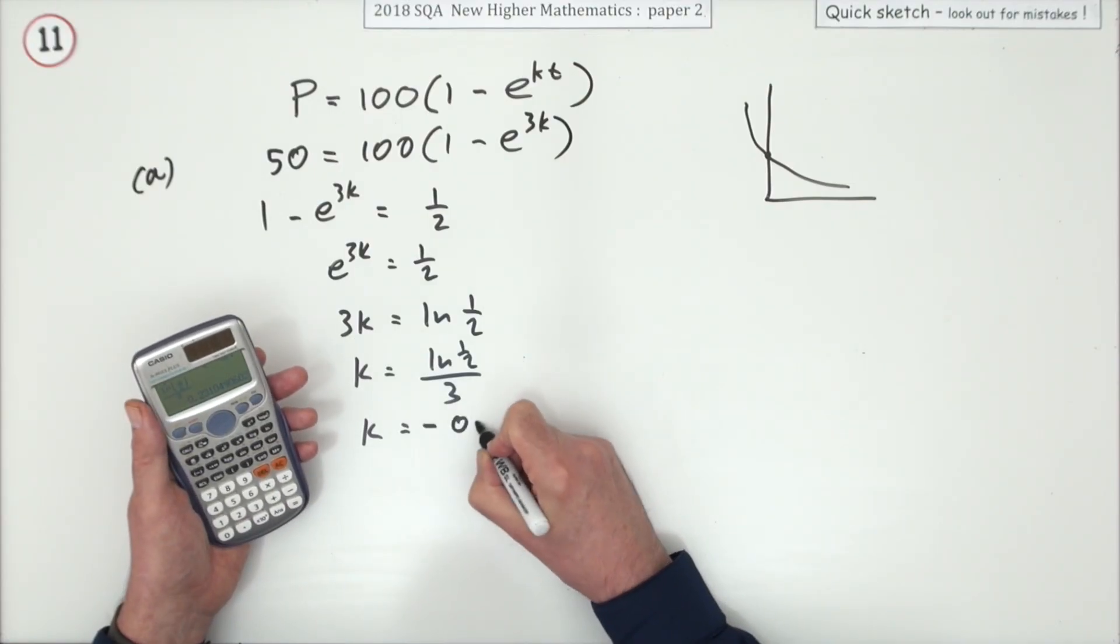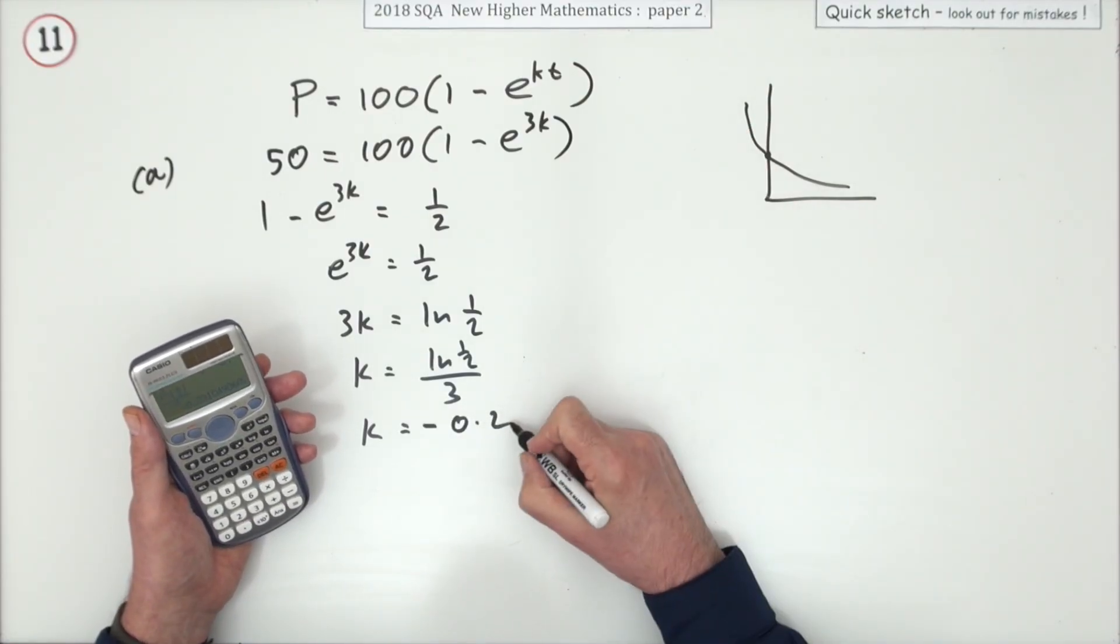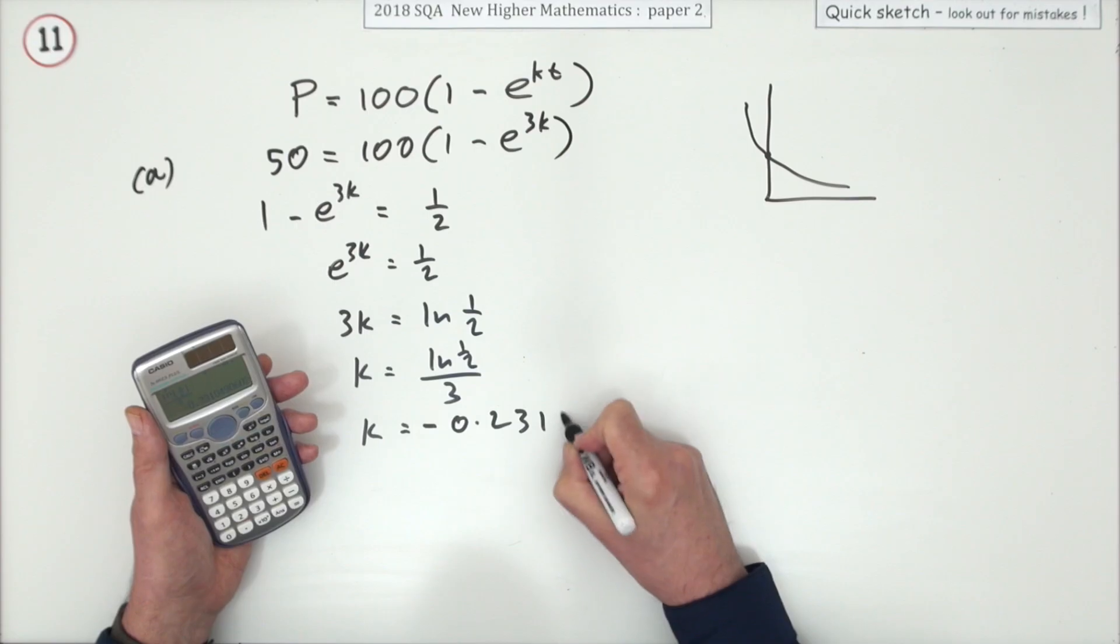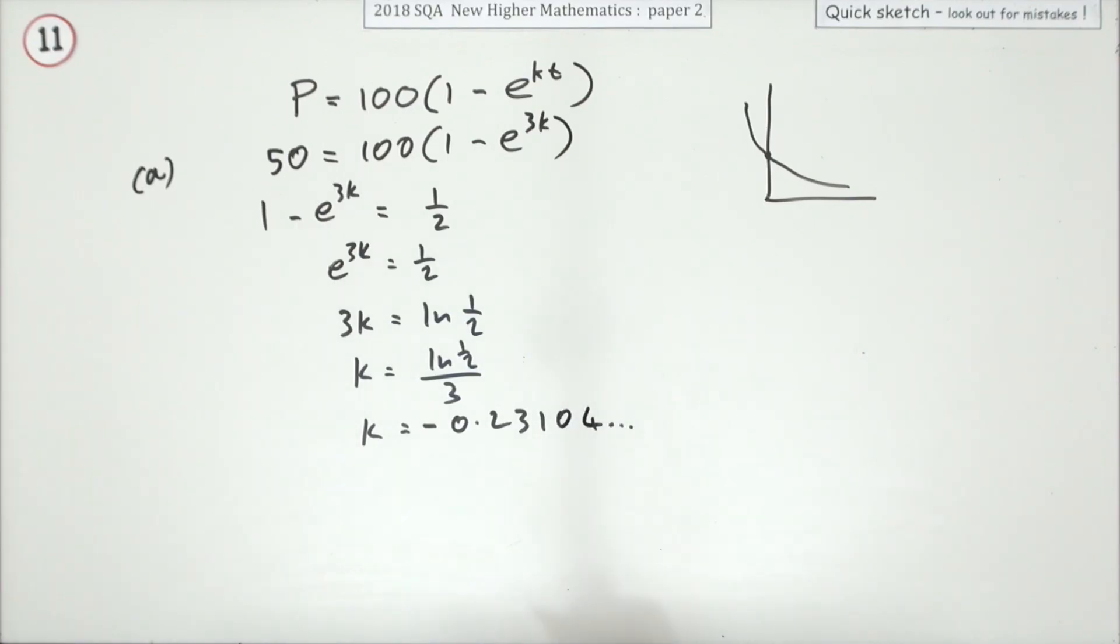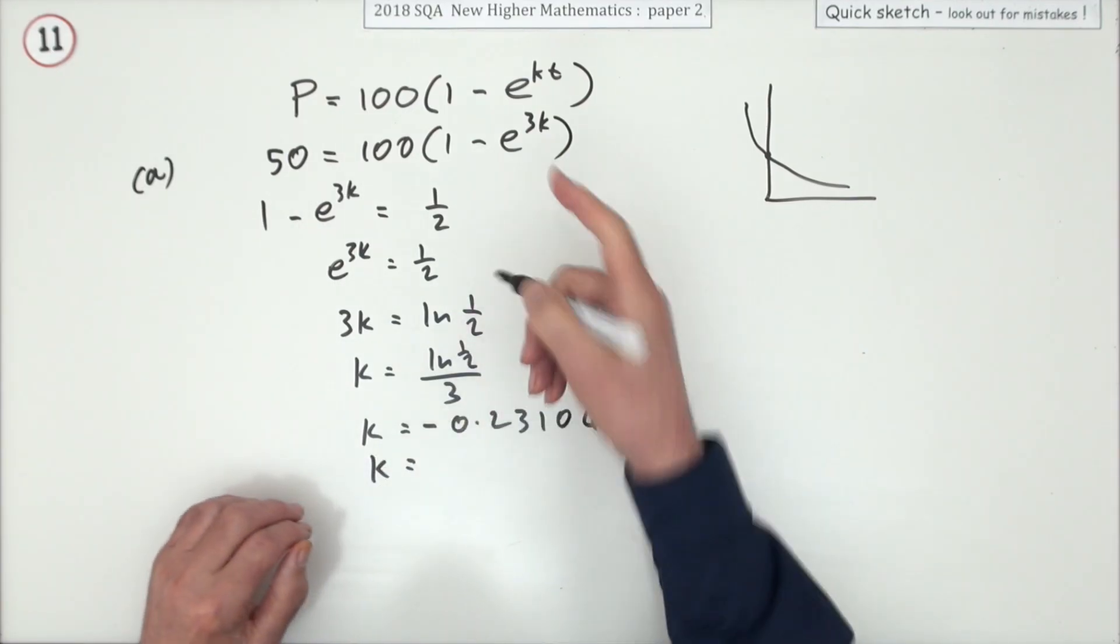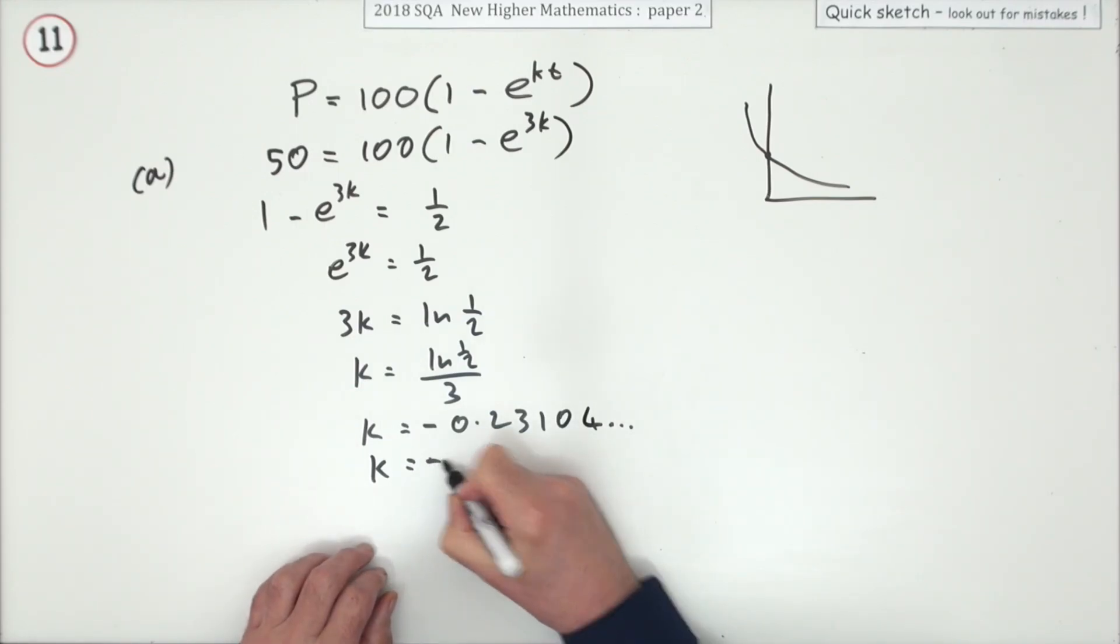Don't be surprised that you get a negative, because it should be a falling function there. Negative 0.2310 and so on. It doesn't say how much to round it off, but usually with exponential you don't round it off too much, so negative 0.231 should do.